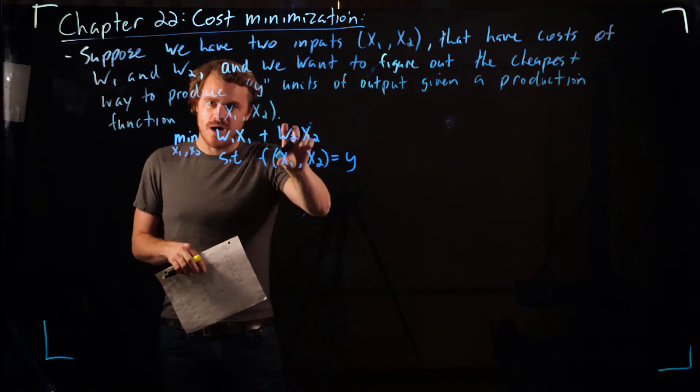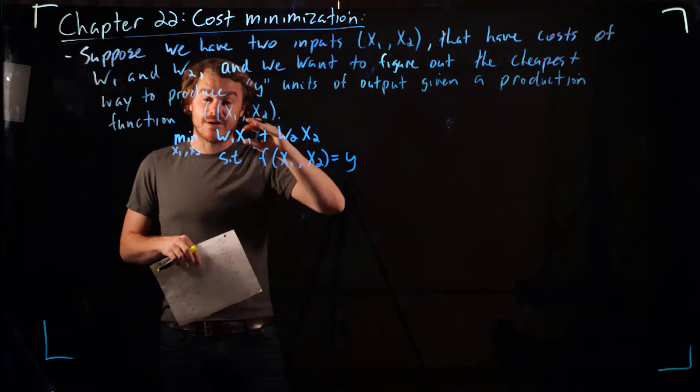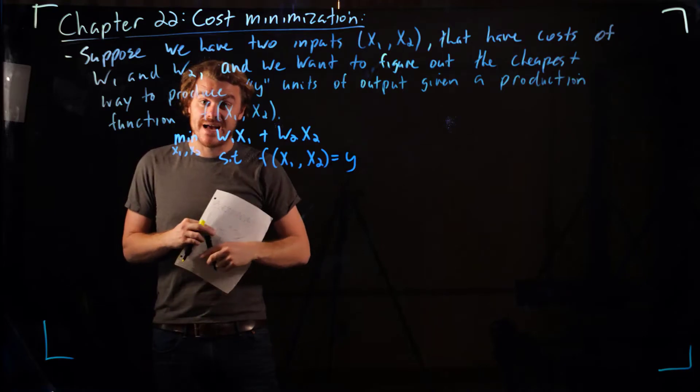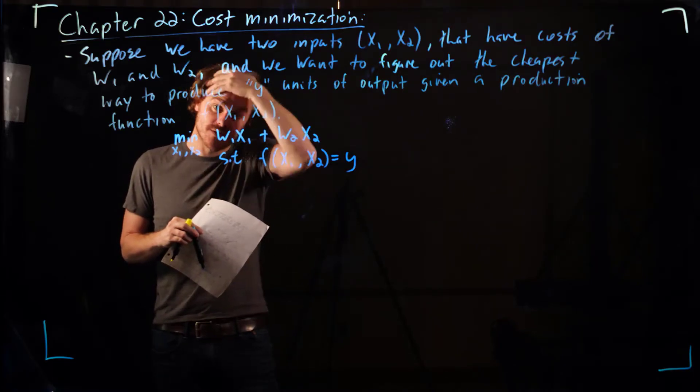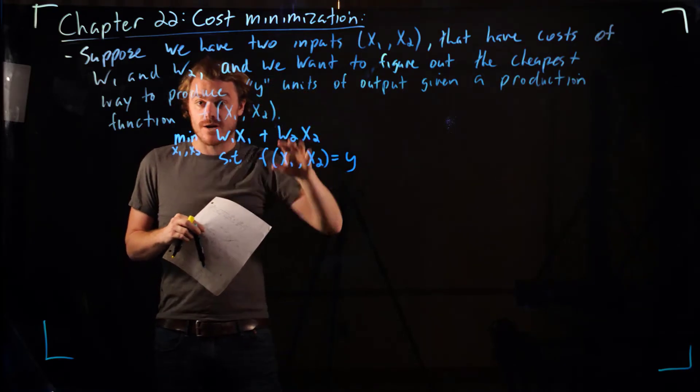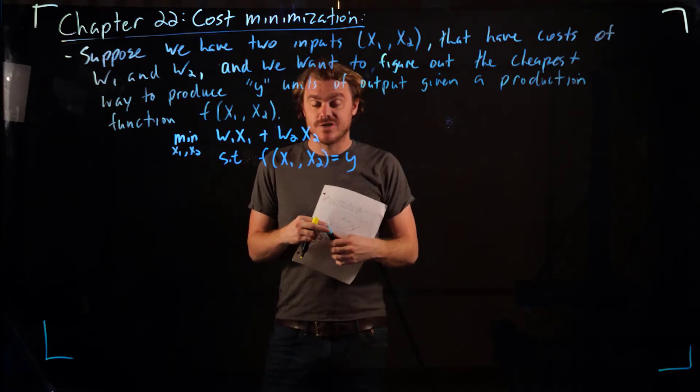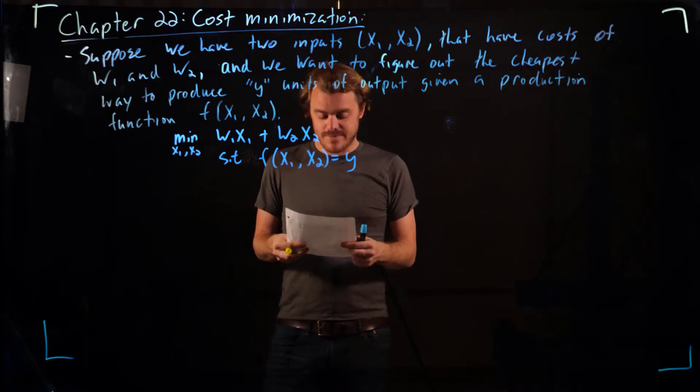The solution to this problem—and we're going to talk about how to graphically represent it as well as how to use algebra or calculus to solve it—is going to look a lot like our utility maximization problems from a few chapters ago.